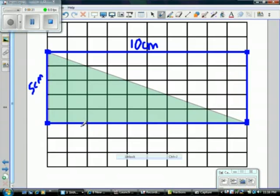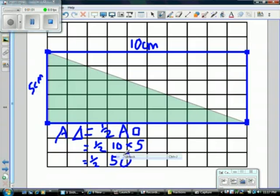I can use my formula: the area of a triangle equals half the area of a rectangle. Half of 10 times 5 equals half of 50, and I know that half of 50 equals 25. So the area of my triangle is 25 centimeters squared.